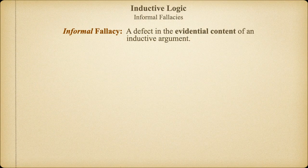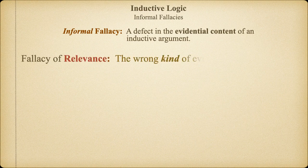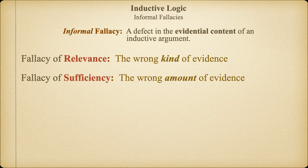We know from the previous videos in this short series that fallacies are errors in the logical structure or content of an argument. We've already examined a number of examples of fallacies that can occur when the evidence provided for a conclusion fails to be relevant, such as appealing to pity or fear, appealing to the crowd or popularity, or attacking your opponent. In our last video, we explored fallacies that occur when we fail to have sufficient evidence to make our conclusions more probable than not. We learned that we have to be extremely careful when drawing inductive conclusions based on authority and making generalizations on small data sets.